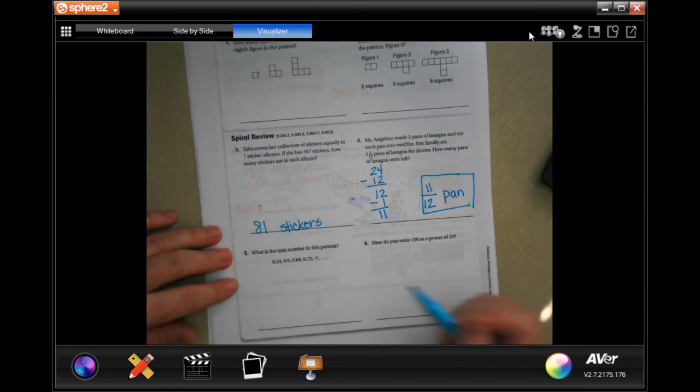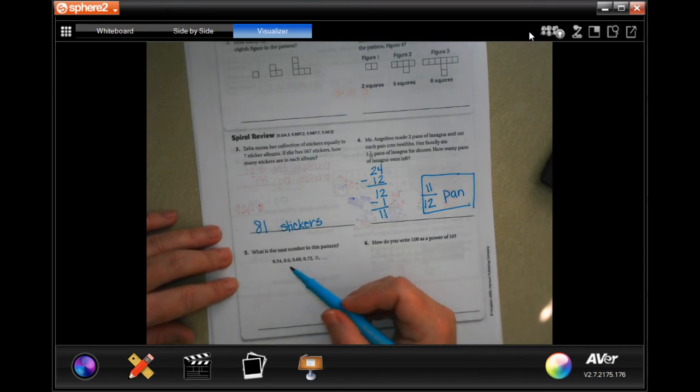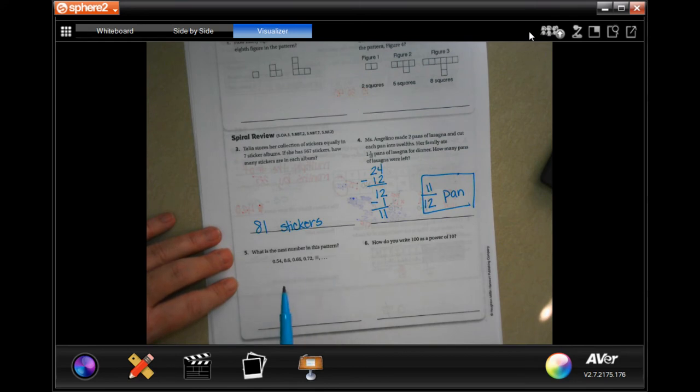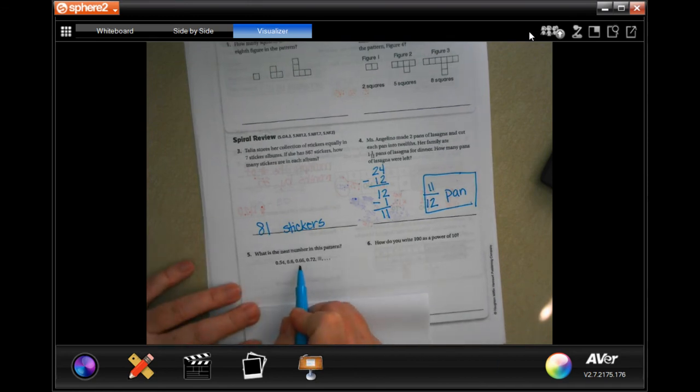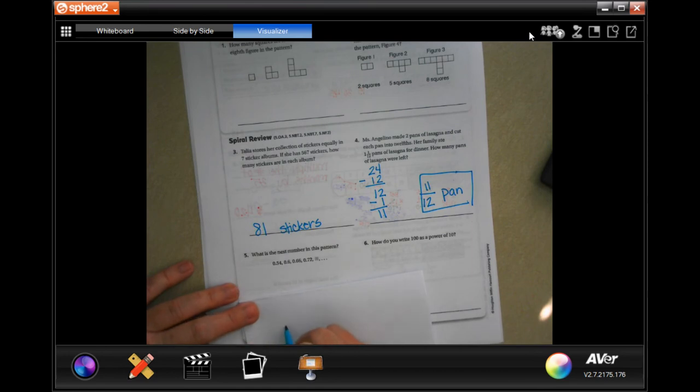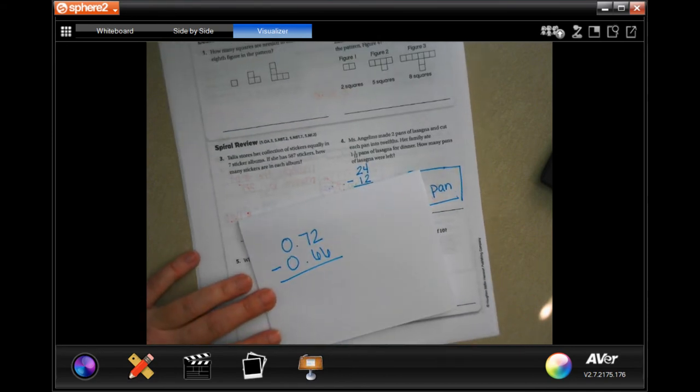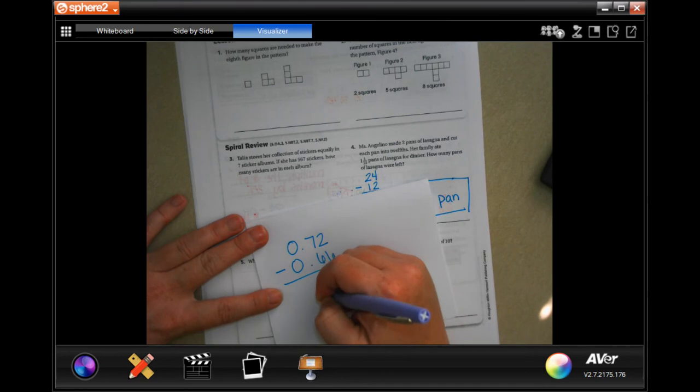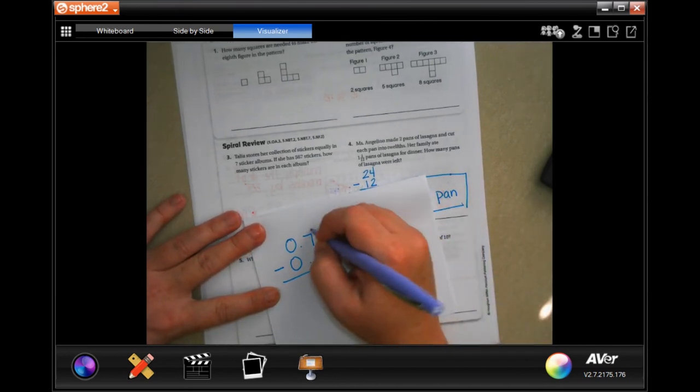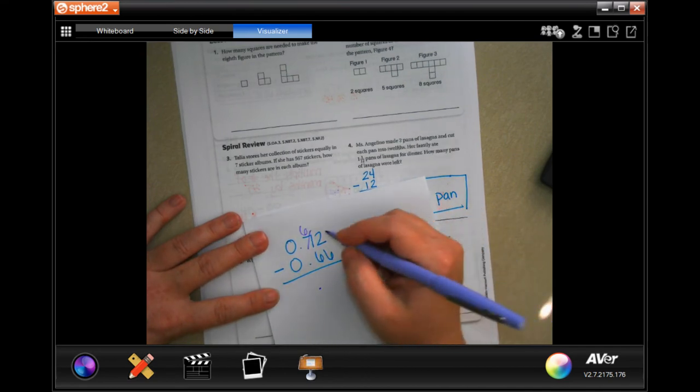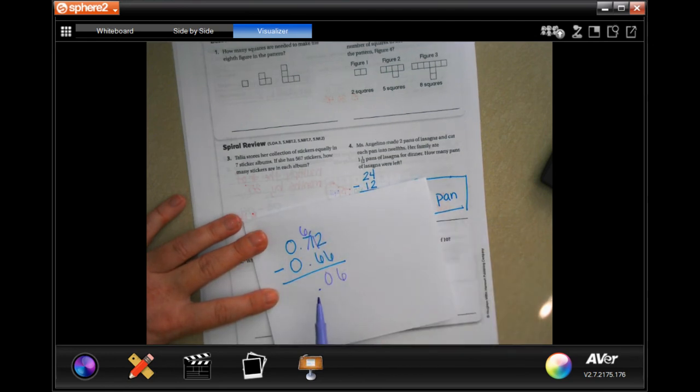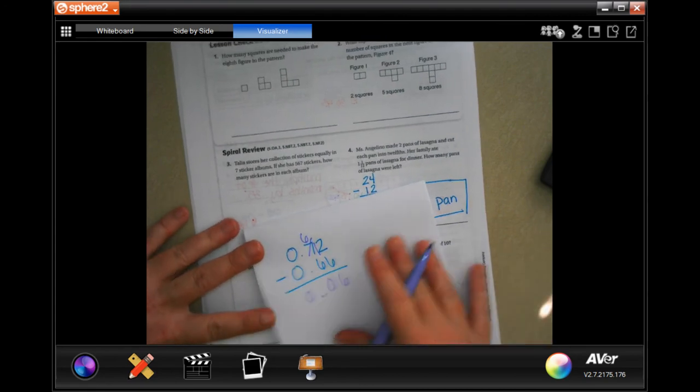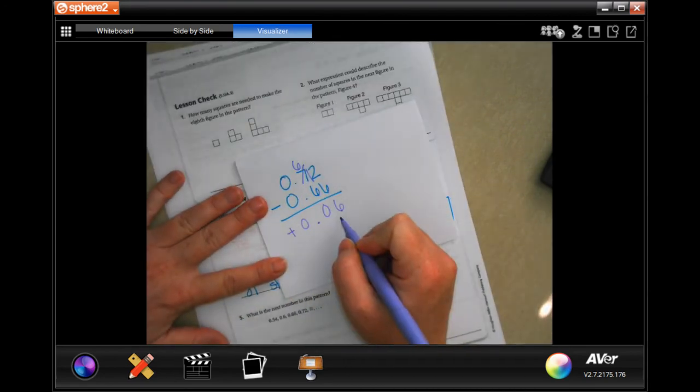What is the next number in this pattern? In order to find that we need to subtract to find the difference so we know what to add. The numbers are going up so we're adding. I'm going to take that 0.72 and subtract the 0.66. Two can't take away six, I'm going to borrow one. 12 minus 6 is 6, and 6 minus 6 is 0. The rule is add 0.06.